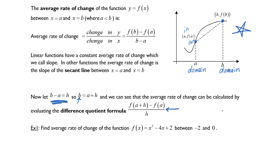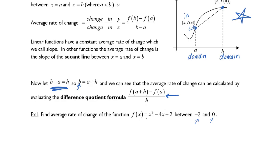We want to find the average rate of change of the function f of x equals x squared minus 4x plus 2 between negative 2 and 0. Well we know that our function can give us outputs, so let's take a, we'll let a equal negative 2 and b equals 0. a is our smaller number and b is our larger number.